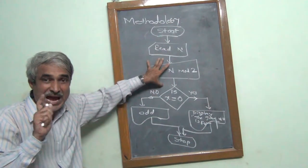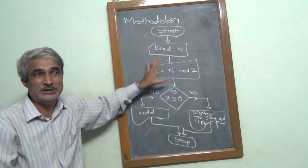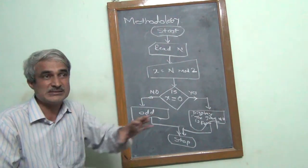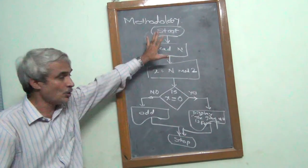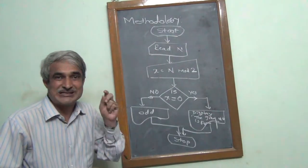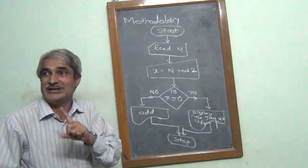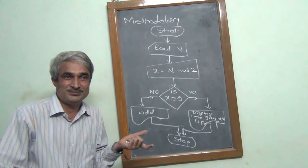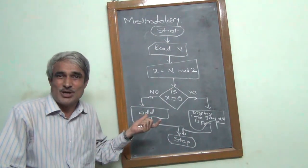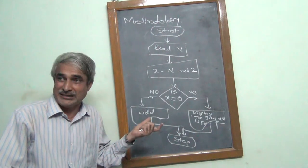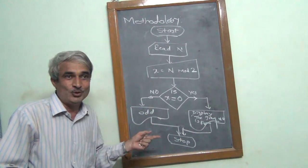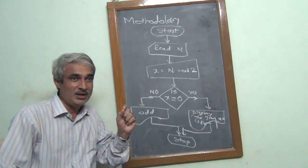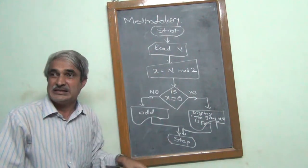Once you can do this for any given problem, then programming is simple. In programming, we convert this logic into the syntax of a given programming language. Logic is expressed in two ways: algorithm and flowchart. If logic is known, you can look up the syntax and write a program. Creating logic is the most important thing.